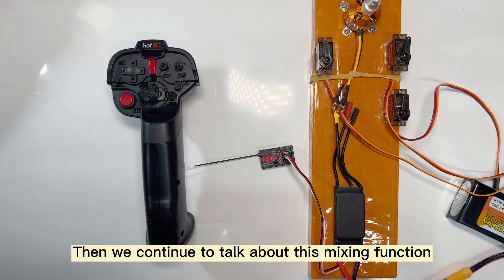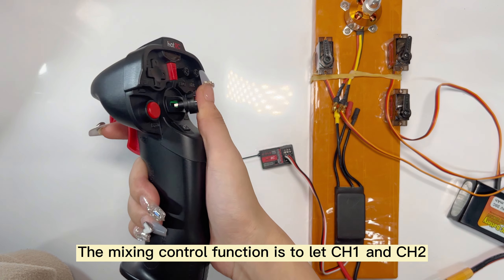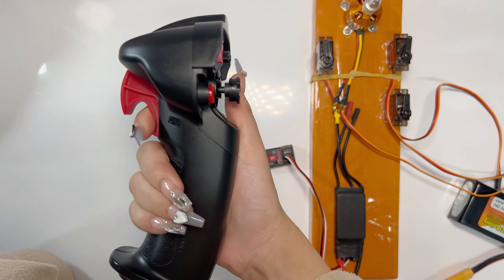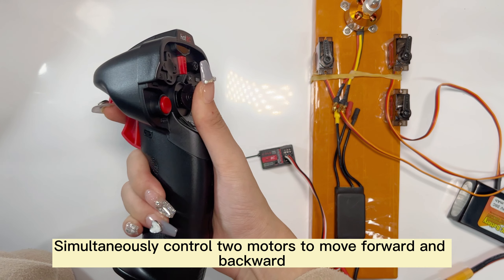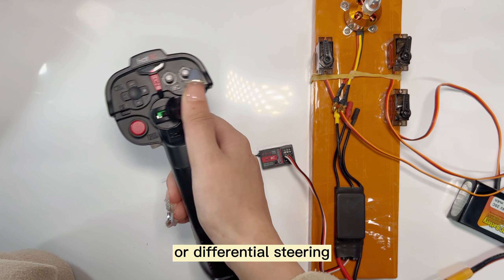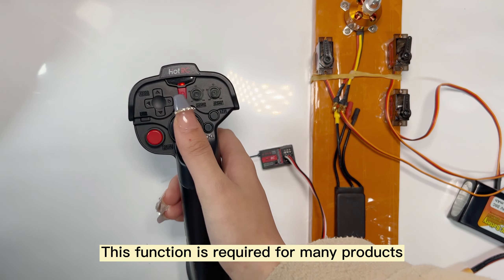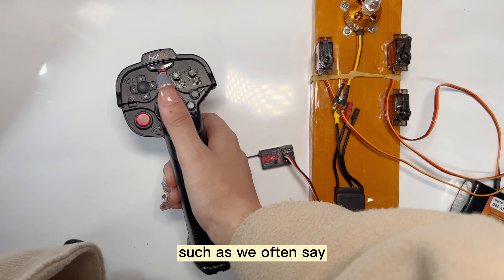We continue to talk about the mixing function. The mixing control function lets CH1 and CH2 simultaneously control two motors to move forward, backward, or differential steering. This function is required for many products.